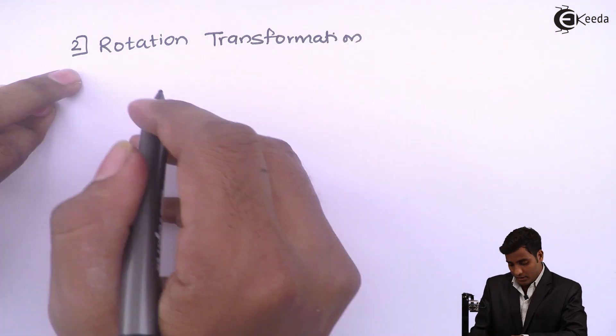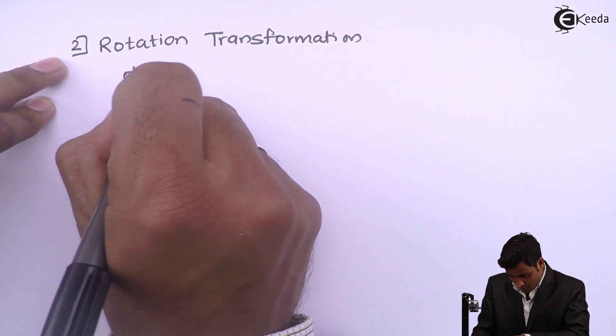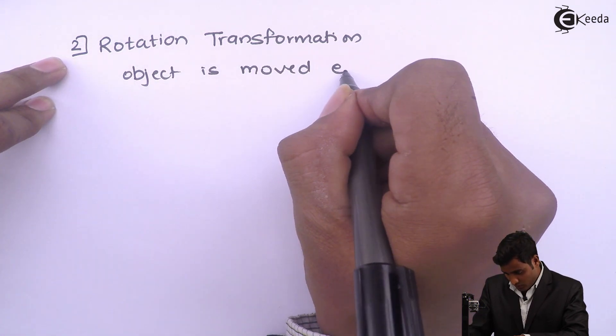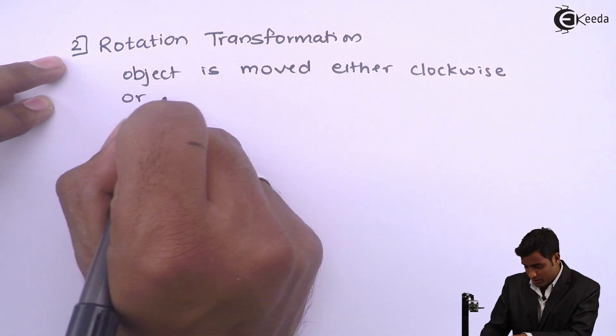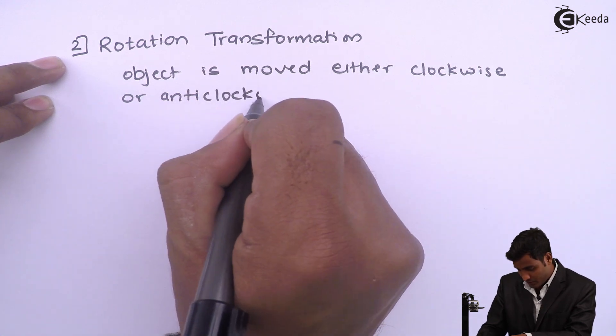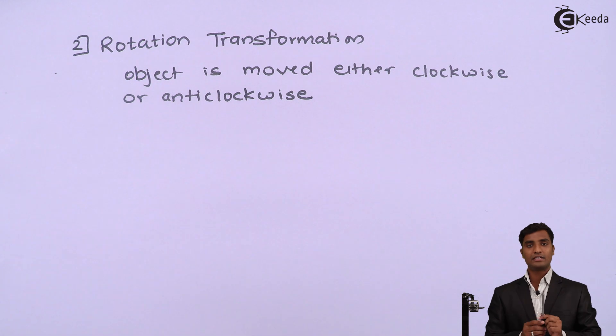In rotation transformation we either move object either clockwise or anti-clockwise. For example if you consider this object if it is in this position will move it this direction.